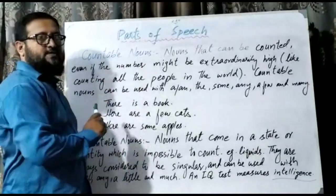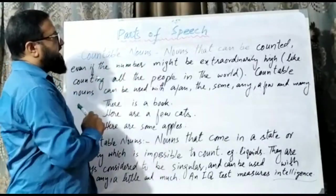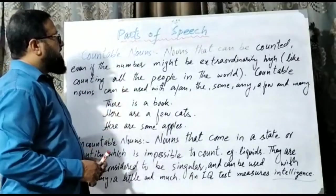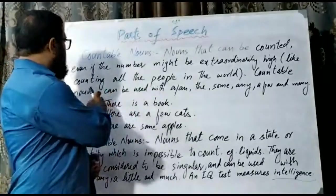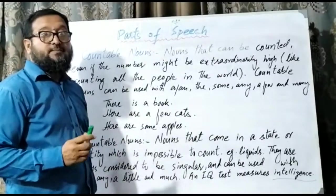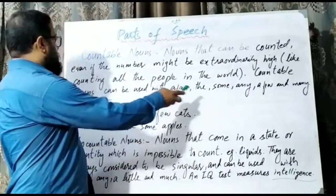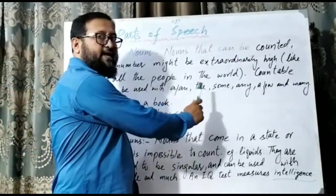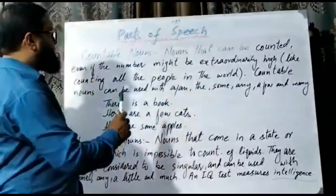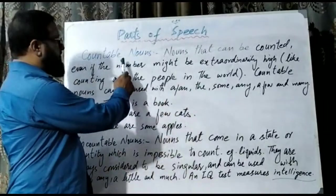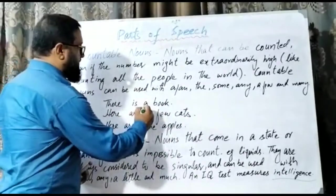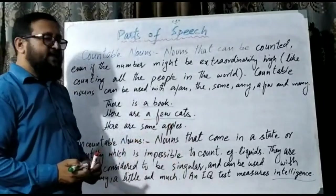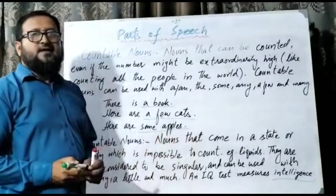Let us discuss countable nouns. Countable nouns are nouns that can be counted, even if the number might be extraordinarily high — like counting all the people in the world, it is still countable. Countable nouns can be used with: a, an, the, some, any, few, and many. For example: 'There is a book,' 'Here are a few cats,' 'Here are some apples.' These are countable nouns.